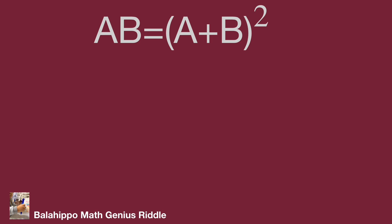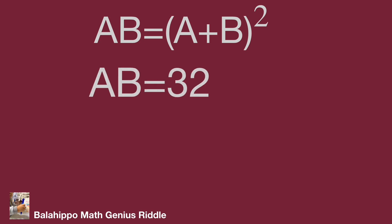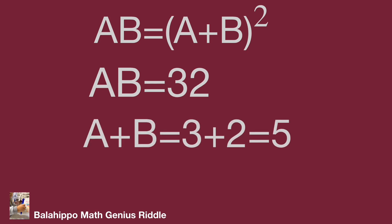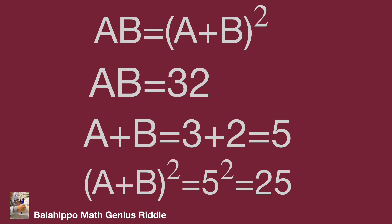The question: two-digit number AB equals the quantity A plus B, squared. What does that mean? Let's take an example. If the two-digit number AB equals 32, it means A equals 3 and B equals 2. So A plus B equals 3 plus 2 equals 5. Then the quantity A plus B squared equals 5 squared equals 25. Then we get a different two-digit number, 25. Obviously AB equals 32 is not the right value.